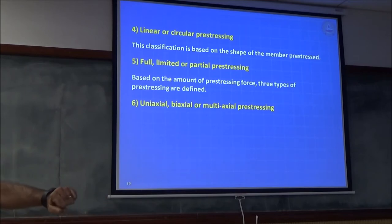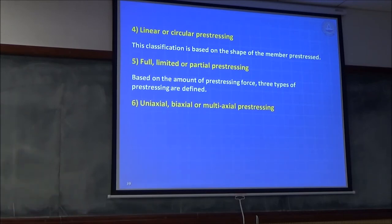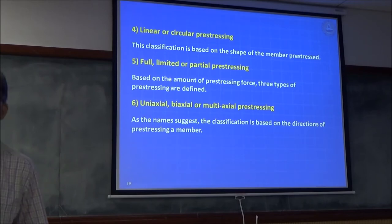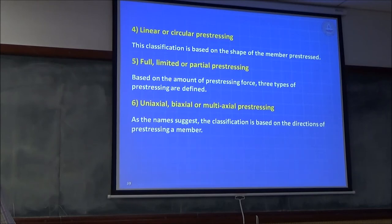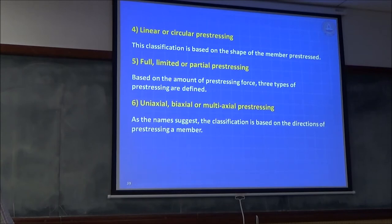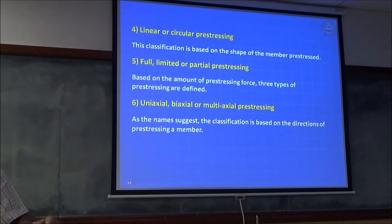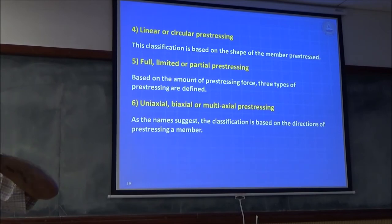Uniaxial, biaxial, or multiaxial pre-stressing: uniaxial is in a beam, pulling in one direction; biaxial is in two-way slabs; multiaxial in domes and similar structures. There have been failures during pre-stressing — the Taiga dome failure of a nuclear reactor, for example. In curved structures there is the possibility of delamination — when something is curved it presses against the hardened concrete and the concrete can separate, creating radial tension which you have to design for.